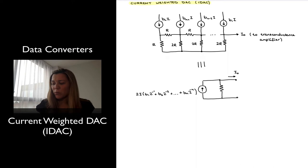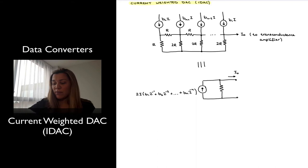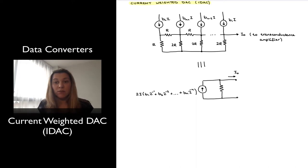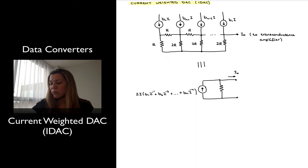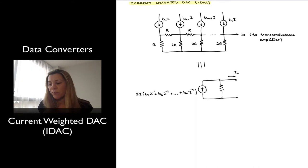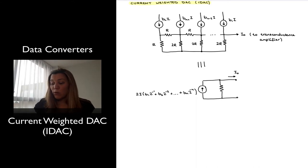What we end up with is also an output current, I_out. If all the bits are equal to 1, it's going to be the sum of all those currents. Each one of those currents represents one LSB — one step LSB in current. If some of those bits are set to 0, then those currents for those particular branches will switch off. When all the bits are equal to 0, the current will be equal to 0.